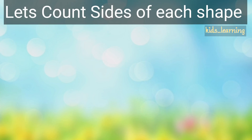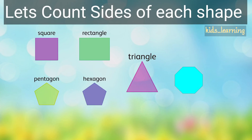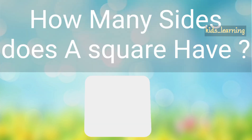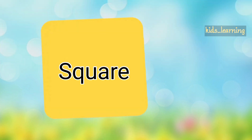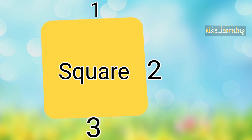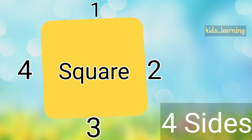Let's count the sides of each shape. How many sides does a square have? Let's count. 1, 2, 3, 4. A square has 4 sides.